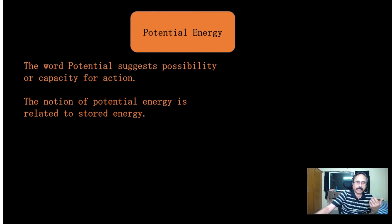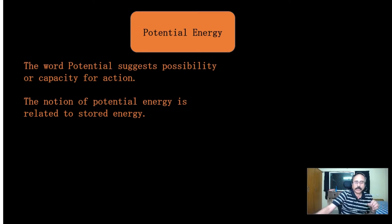That work can be against the gravitational force, against the electrostatic force, or against any other force. The work done against a force is stored in the form of potential energy. Potential energy can be defined as the energy gained by any object by virtue of its position, state, or configuration.